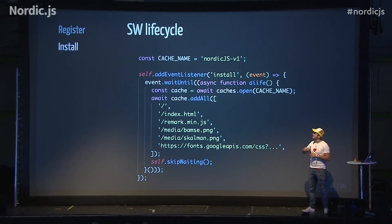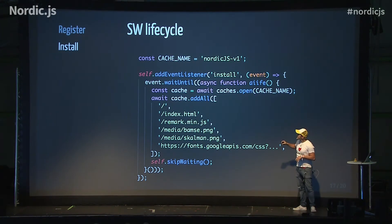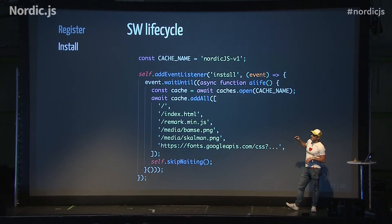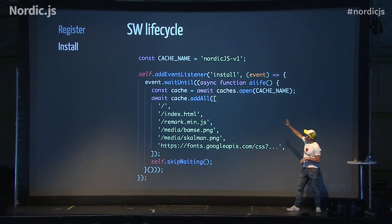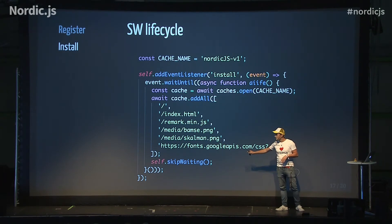If registration is successful, the service worker will be downloaded and parsed, and we go into the install event. This is a perfect place for caching our static assets. I'll introduce the AIFE here — the async immediately invoked function expression — so we can write async/await code. First, we open up our cache, called 'nordic-js-v1' right now, and then we add all our static assets to the cache. When that's done, we call self.skipWaiting.